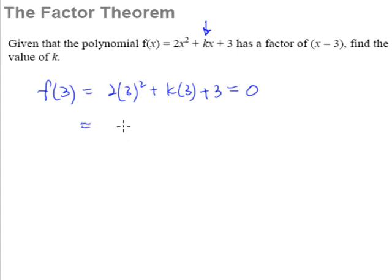So from here, we can work this out very easily. This is 18 plus 3k plus 3 is equal to 0. And therefore from here, we can work out that our k is equal to negative 7. So this is what the factor theorem is all about.